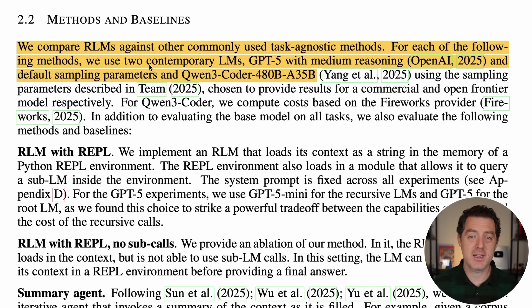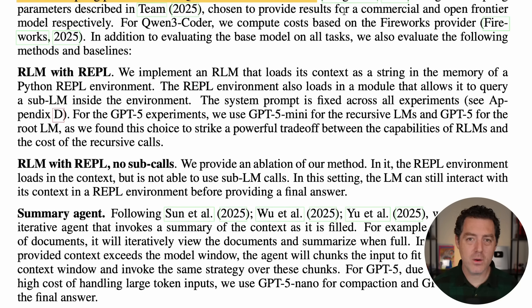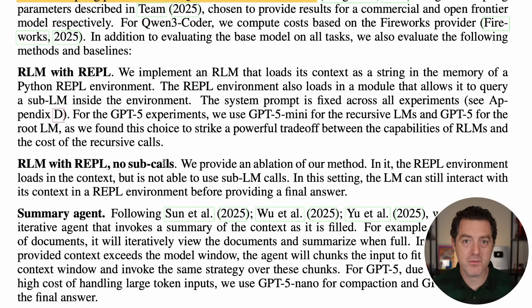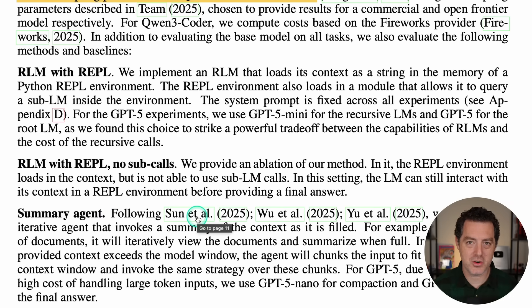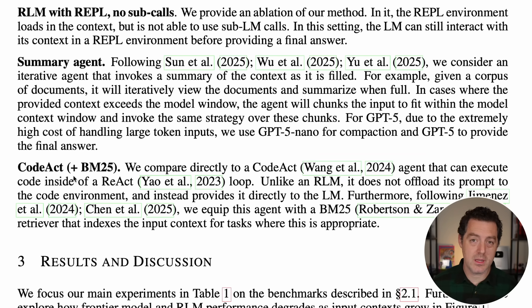They tested all of this against two main models: GPT-5 with medium reasoning, and the open-source Qwen3 Coder 480B with 35 billion active parameters. They used four approaches: RLM with REPL, RLM with REPL but no subcalls, a summary agent representing the traditional method, and CodeAct — similar to RLM but without offloading the prompt outside the context window.